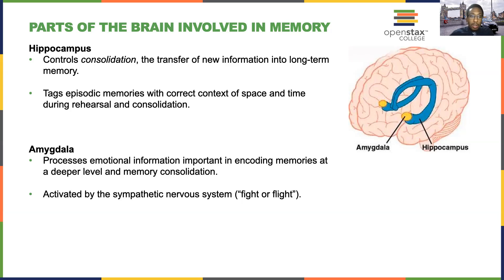Then there's the amygdala, which is a structure that processes emotional information so that it makes it easier to remember. We often find that emotional memories are easier to remember than emotionally neutral memories, and that has a lot to do with the neuroanatomical structure of the amygdala and its location positioned right on the hippocampus.